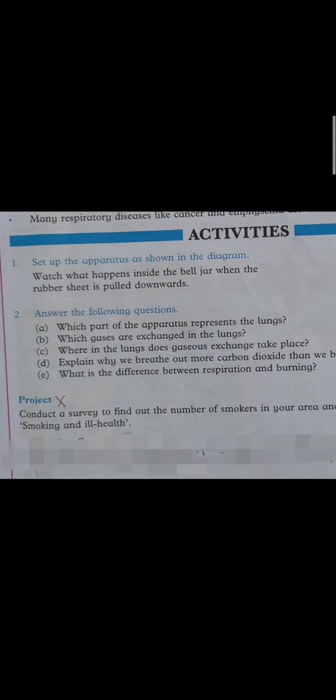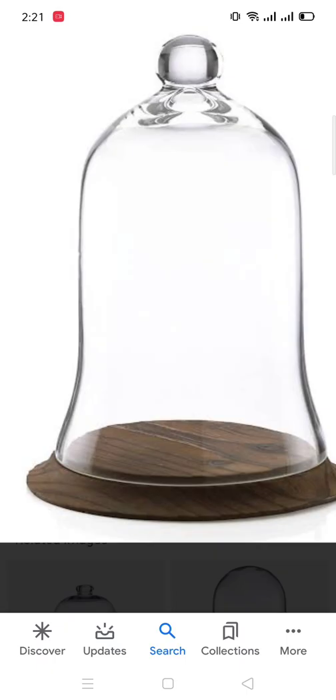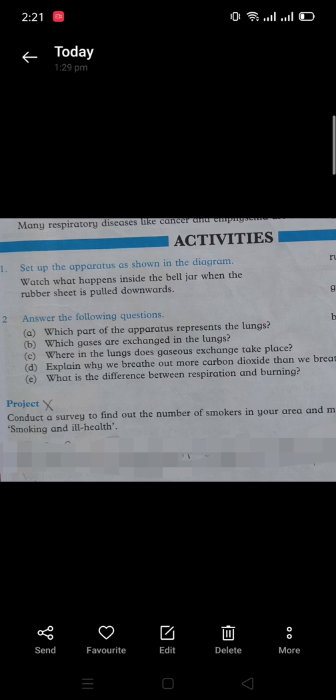Assalamu alaikum Class 7 students. Today we are going to do exercises from Chapter 2, page 17. This is an activity - it is a model of your respiratory tract. Set up the apparatus as shown in the diagram. Watch what happens inside the bell jar. This is what a bell jar looks like when the rubber...